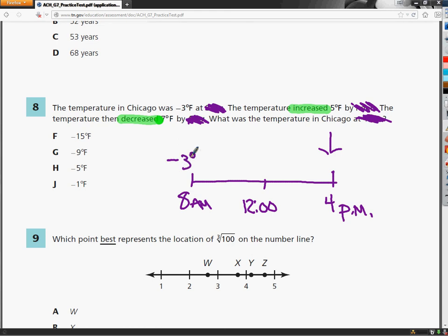it increased 5 degrees, so plus 5. Negative 3 plus 5 degrees would make it 2 degrees Fahrenheit at 12 o'clock.